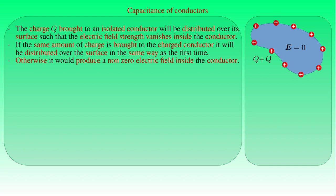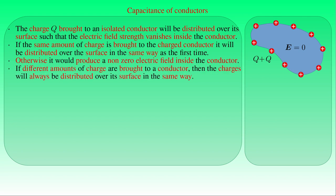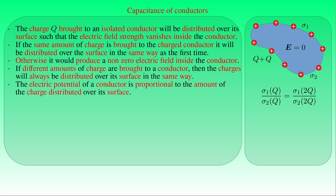In general, if different amounts of charges are brought on an insulated conductor, the charges will always be distributed over the surface of the conductor in the same way. That is, the ratio of the surface charge densities at two arbitrary points on the surface of a conductor is always the same. As a result, we can assume that the electric potential of the conductor is proportional to the amount of electric charge distributed over its surface.